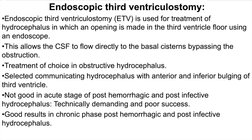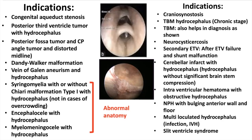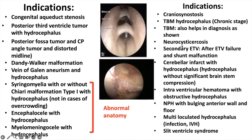ETV is not a good option in the acute stage of post-hemorrhagic and post-infective hydrocephalus — it is technically demanding and has a poor success rate — but there are good results in the chronic phase. The best indications are congenital or acquired aqueductal stenosis, lesions in the posterior third ventricle and posterior fossa, and some congenital anomalies associated with hydrocephalus.